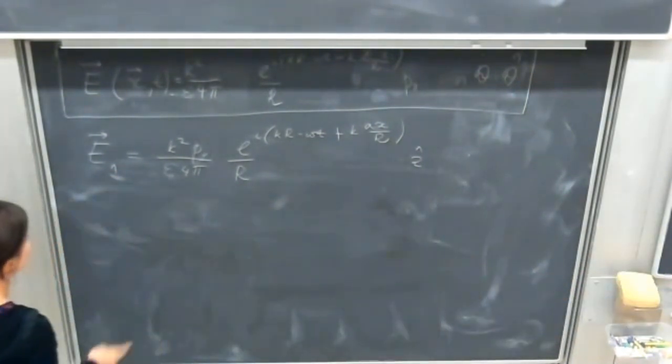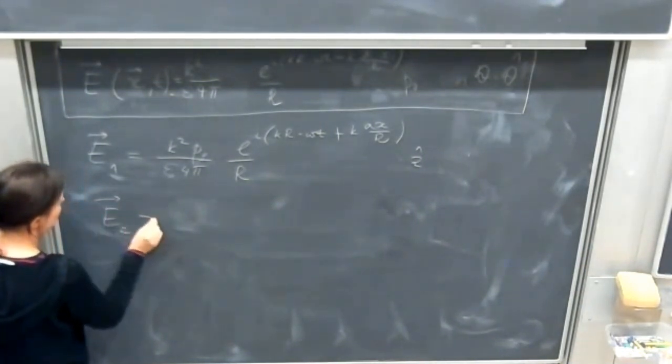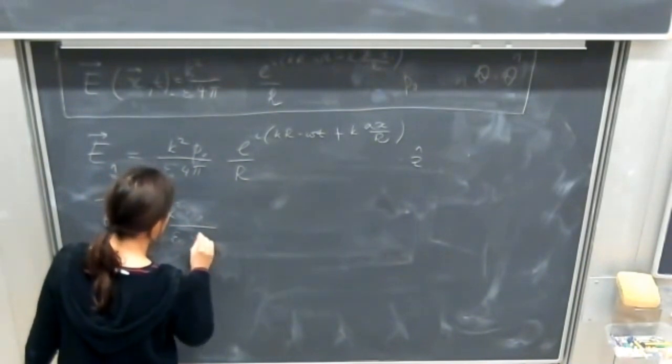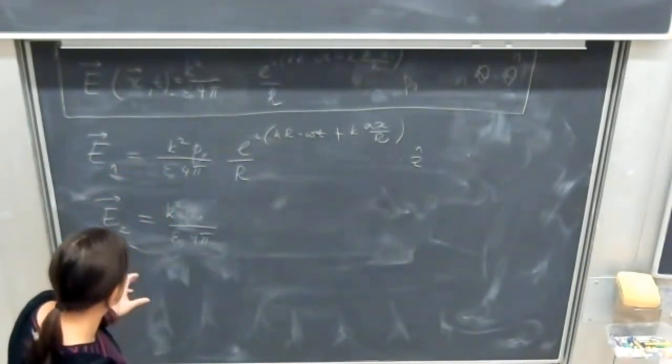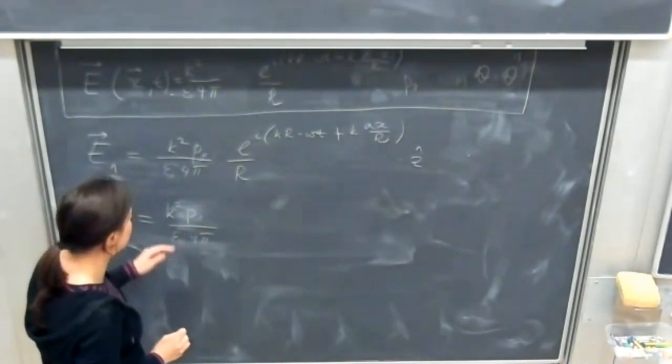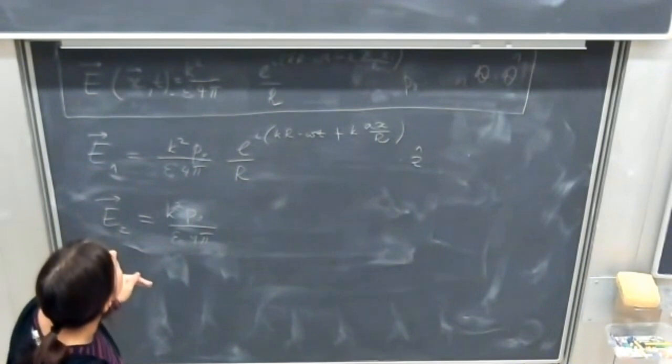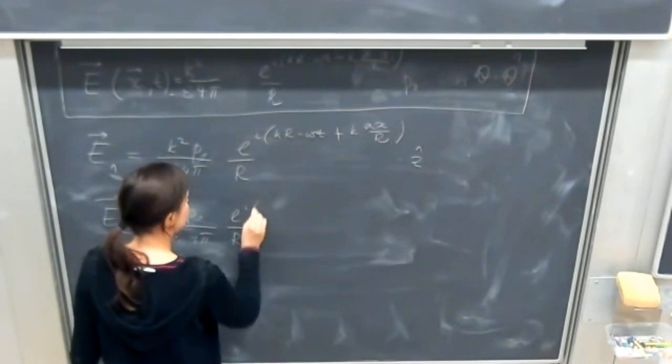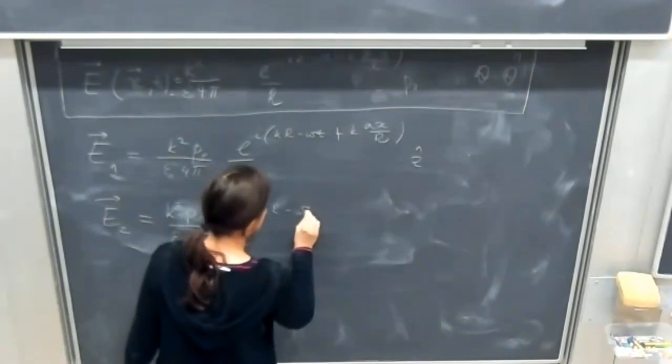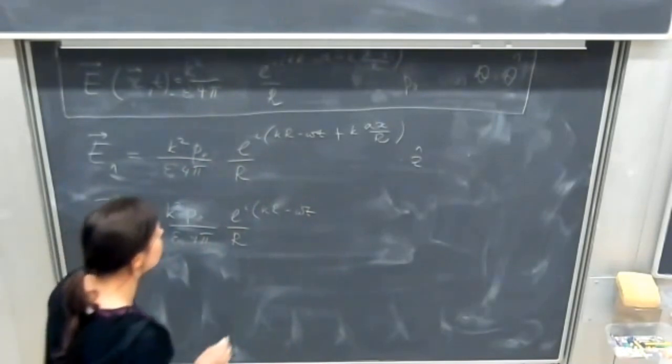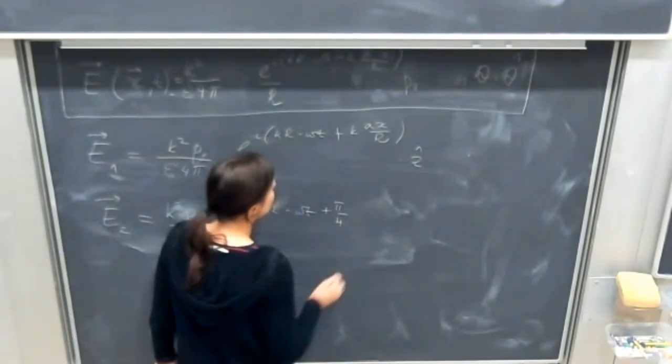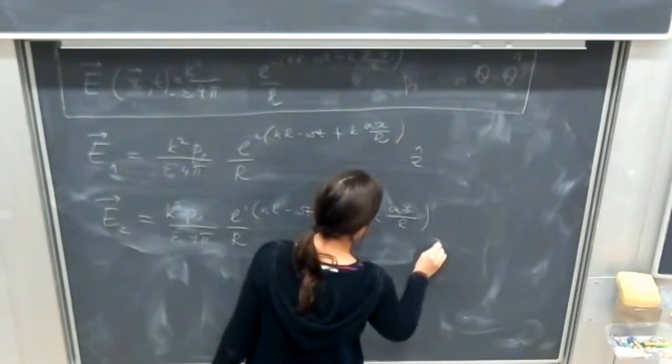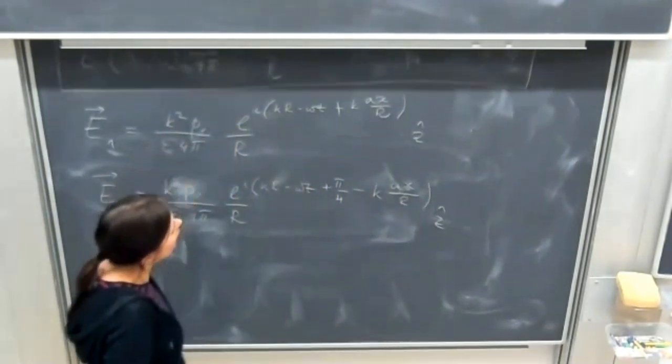For the second one, the dipole moment amplitude is the same, then it's divided by r, minus omega t and here alpha equals minus pi over four, minus... divided by r in that direction.